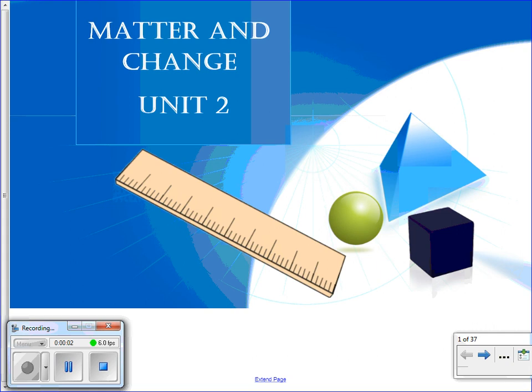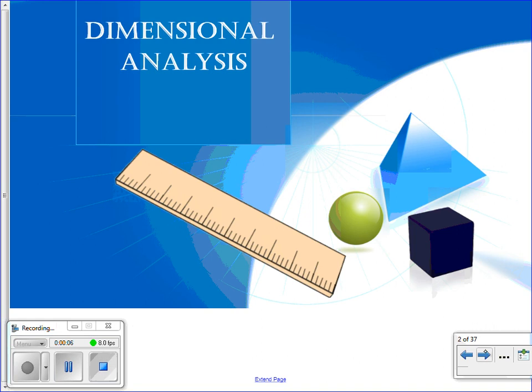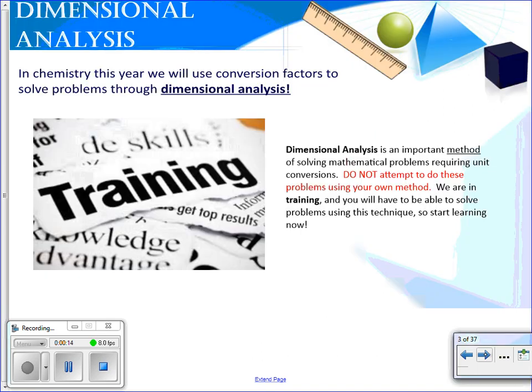Hi, this is Ms. Warnow. This is our new unit, Matter and Change Unit 2. We're going to be today looking at dimensional analysis. This is sometimes called factor label or unit analysis. You'll be using this skill not only in chemistry but also in physics next year.